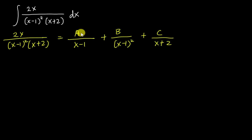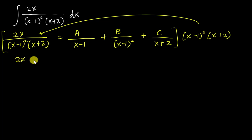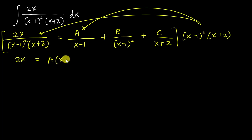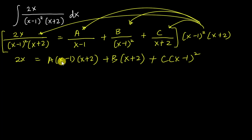To find A, B, and C, I multiply everything by the denominator (x-1)²(x+2). The left side becomes 2x. For the A term, (x-1) cancels leaving A(x-1)(x+2). For the B term, (x-1)² cancels leaving B(x+2). For the C term, (x+2) cancels leaving C(x-1)².